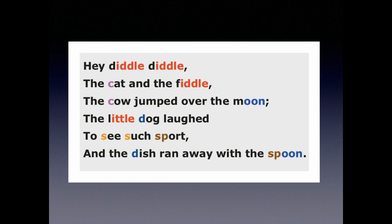In its oldest surviving version, the fifth line of 'Hey Diddle Diddle' was 'to see such craft,' so that 'laughed' and 'craft' were end rhymes, and the pattern of similar lines was then A-A-B-C-C-B instead of, as I learned it, A-A-B-C-D-B. As for the poem's subject matter, fiddle strings were made from cat gut, cheese was obtained from the milk of a cow, the moon was made of green cheese, the crescent moon — the cut-out shape on outhouse doors — was the same as the shape of a cow's horn, and 'moon' was a vocal reminder of 'moo.'